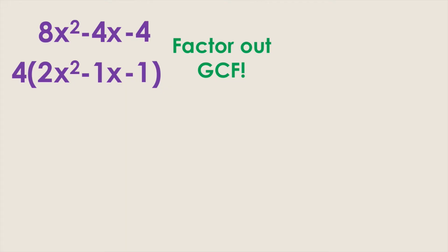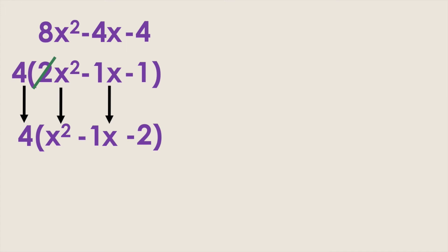So to start that off we're going to slide the leading coefficient 2 and multiply it with the last term negative 1 to get negative 2. Bring all your other terms down including the 4 in front. So we're left with 4 times x squared minus 1x minus 2.